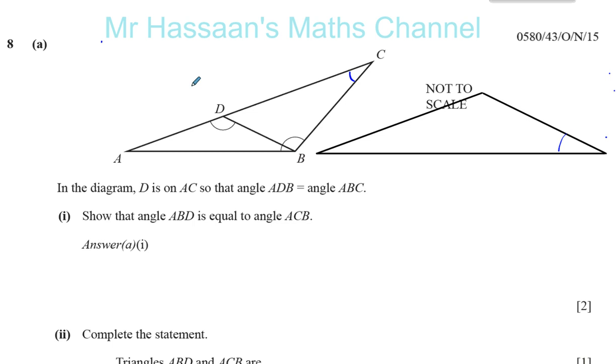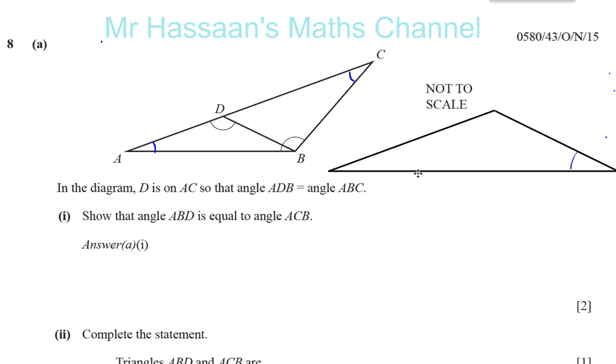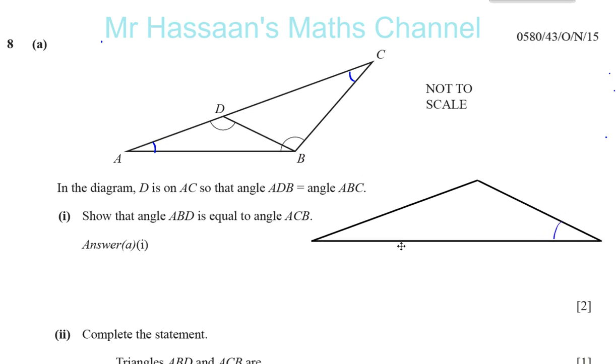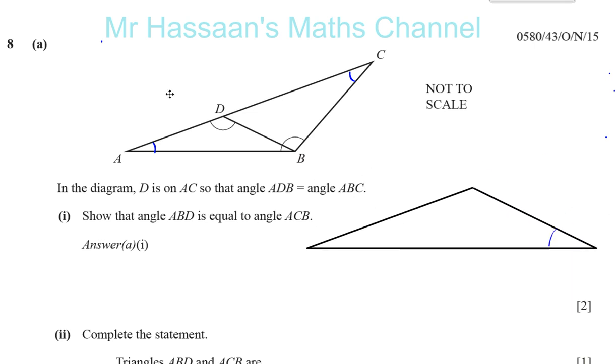Now, what we can see is this angle here is common. This is angle A, and this is also angle A. And in the big triangle, this is angle C, the one we have to prove that it's the same. And this is angle B, the big triangle.